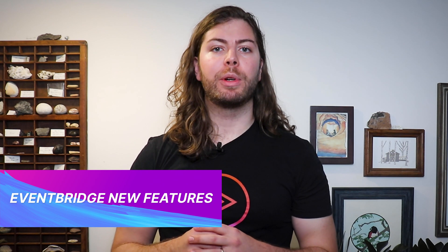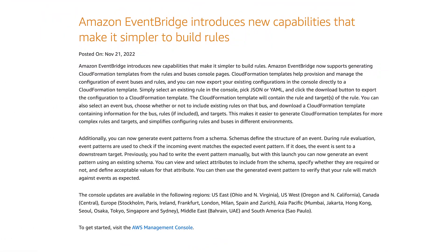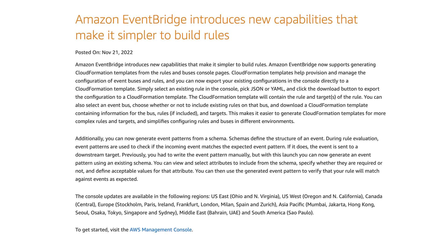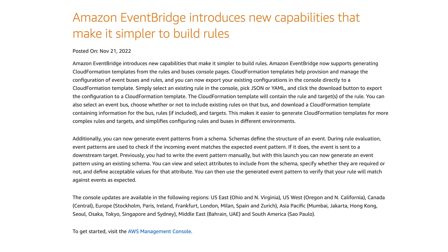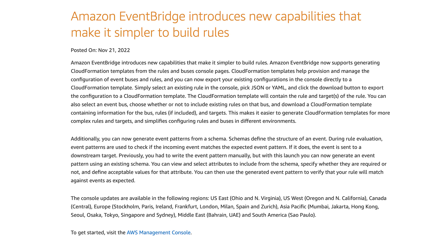This week, AWS continued to pile on new EventBridge features, announcing two more quality of life updates. You can now generate CloudFormation templates from existing EventBridge rules, as well as automatically generate patterns from an event schema. Patterns are used to check whether an incoming event matches the expected format, and historically these had to be written manually. I'm excited to see what other EventBridge features will be unveiled at this year's re:Invent.